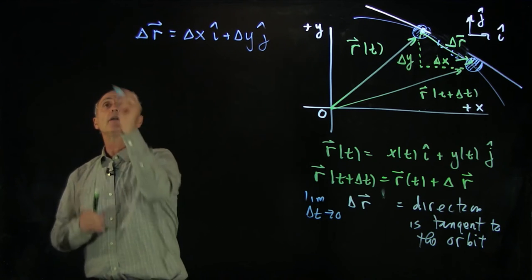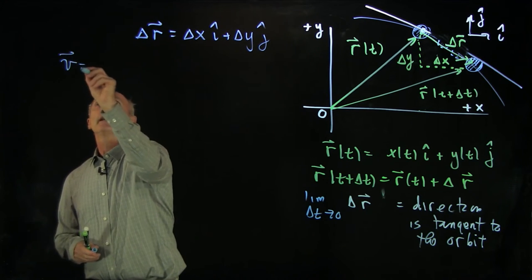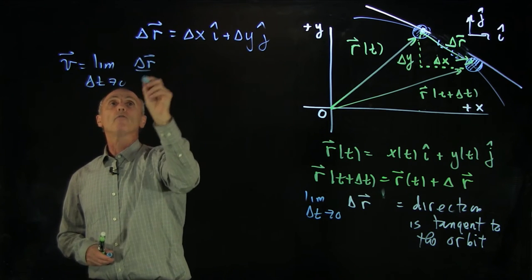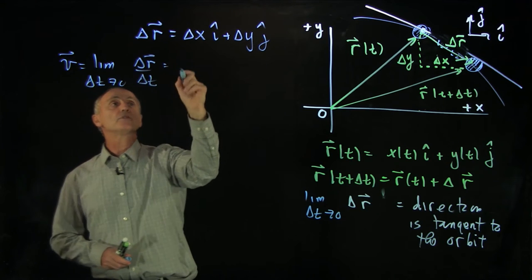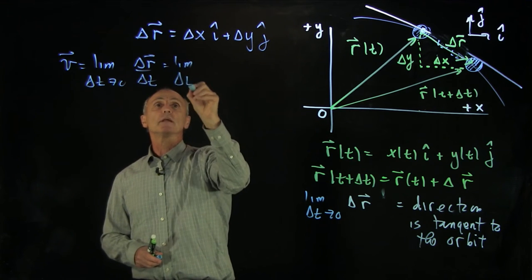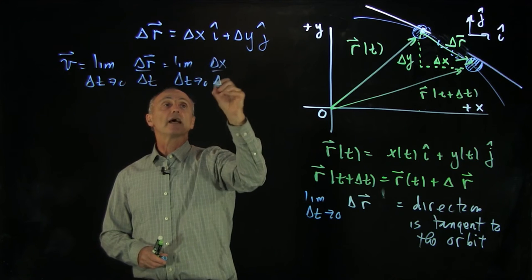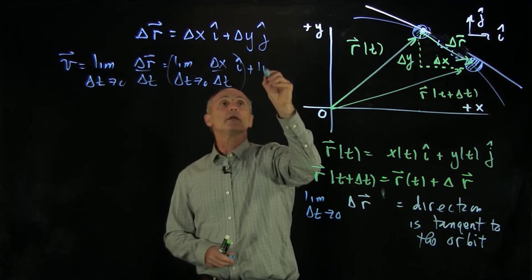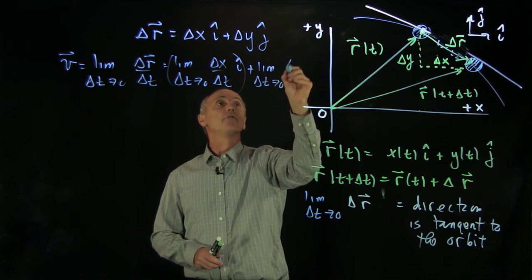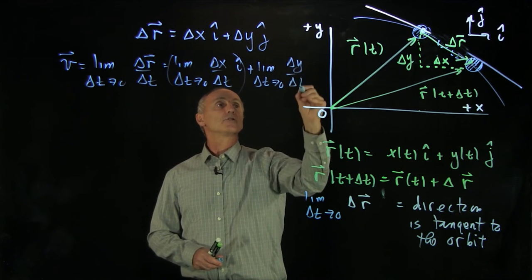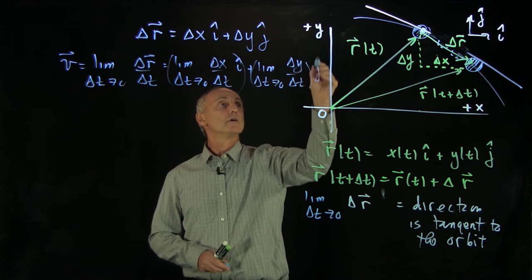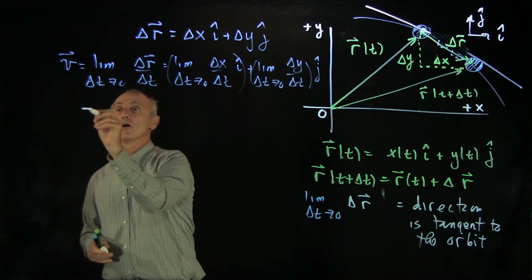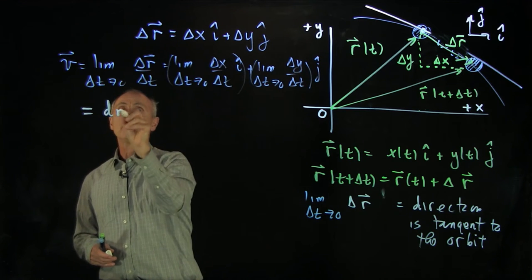Now if we want to define our velocity as the limit as delta t goes to 0 of delta r over delta t, then what we see is we have two pieces: the limit as delta t goes to 0 of delta x over delta t i hat plus the limit as delta t goes to 0 of delta y over delta t j hat. And the definition of these limits, we'll write that as the derivative dr dt.